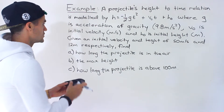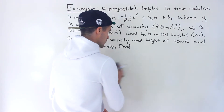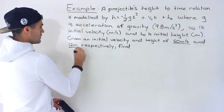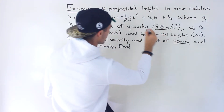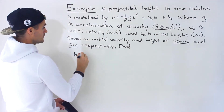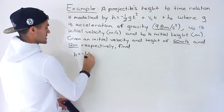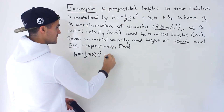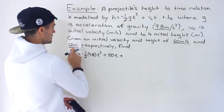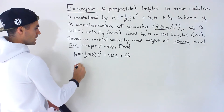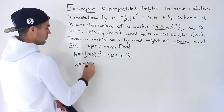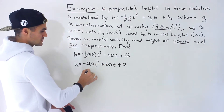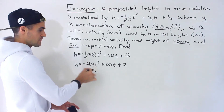First, we want to input these values into the function, plugging in 9.8 for g. What we end up having is negative one over two times 9.8 t squared, plus 50t, plus 12. When you multiply the coefficients, you'd end up with negative 4.9 t squared. You'll often see this negative 4.9 as the a value in these kinds of quadratic projectile questions.